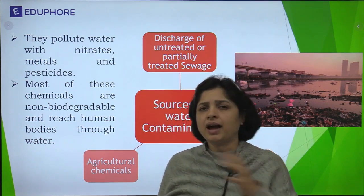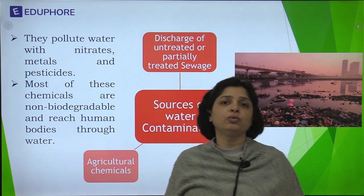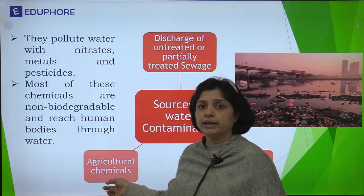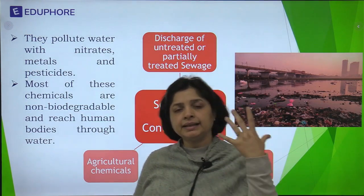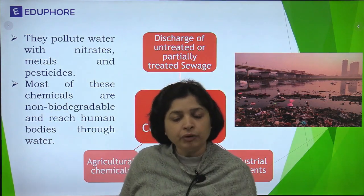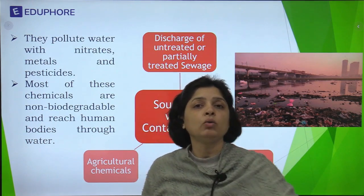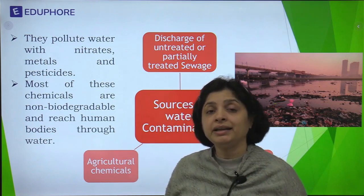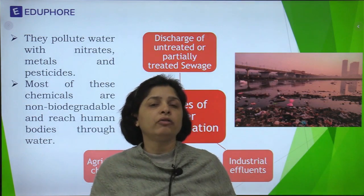Untreated sewage is another major source of water pollution. When we drink contaminated water it leads to a great deal of health problems — from dehydration and outbreaks of cholera and other waterborne diseases all the way to cancerous diseases. Industrial effluents, agricultural chemicals, and untreated sewage together are the main causes of water contamination.